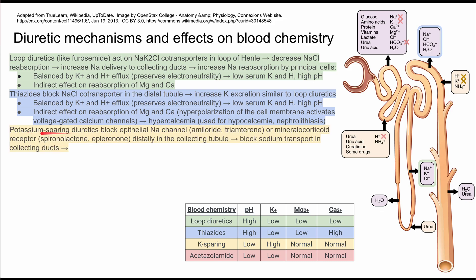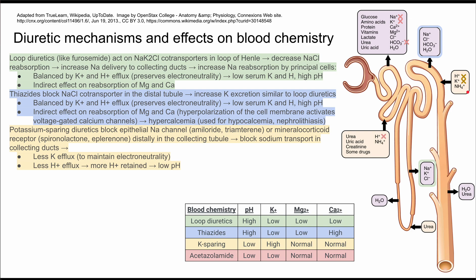The next category is potassium-sparing diuretics. There are two subcategories: one blocks epithelial sodium channels, including amiloride and triamterene; the other blocks mineralocorticoid receptors, including spironolactone and eplerenone. Both act in the distal collecting tubule, blocking sodium transport in the collecting ducts. As shown in yellow, this leads to less potassium efflux and less hydrogen ion efflux, resulting in a low pH — the opposite of loop and thiazide diuretics.